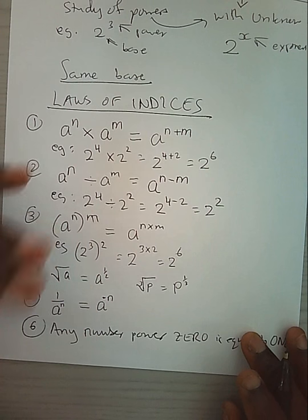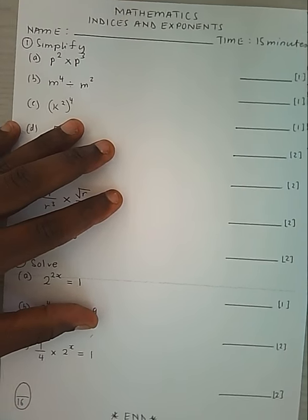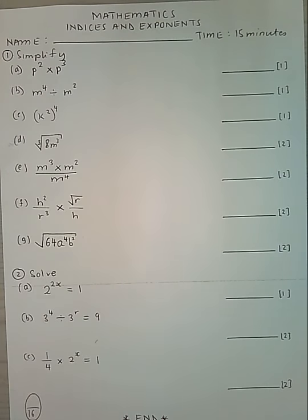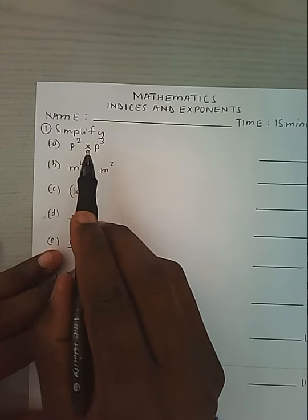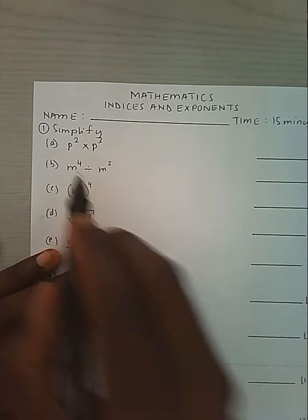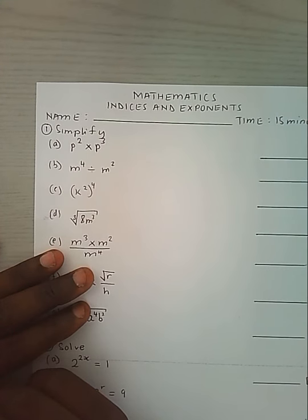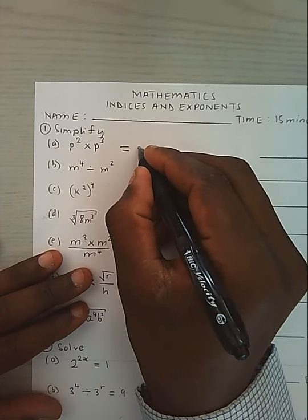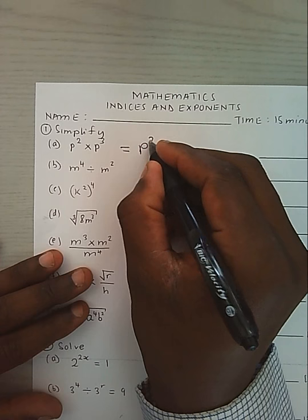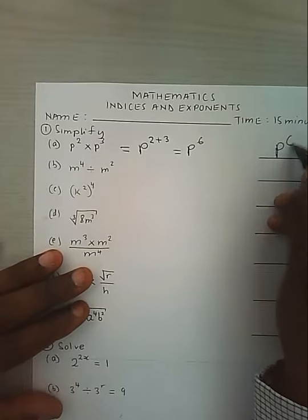How can we use these laws? Here is a sample of questions. When you look at question number 1, we are told to simplify p power 2 times p power 3. According to our law, since they have the same base, we shall just take one base and add the powers, giving us p power 5.